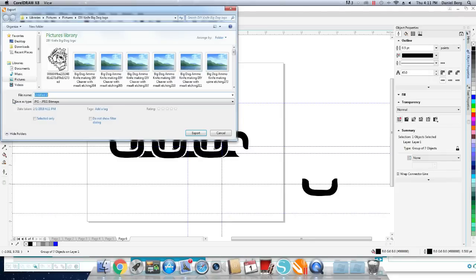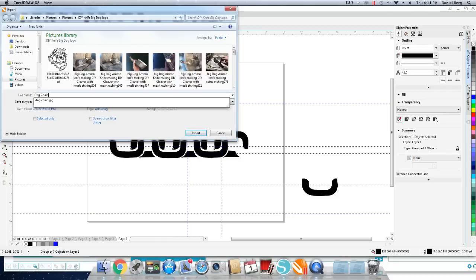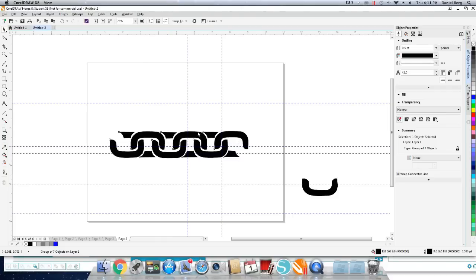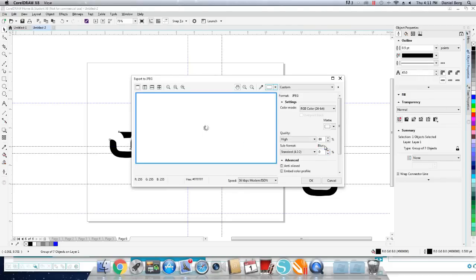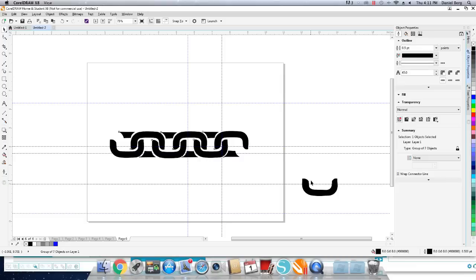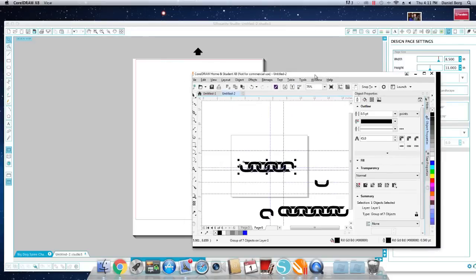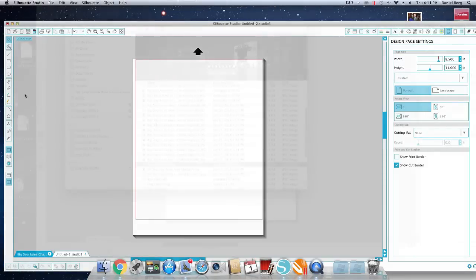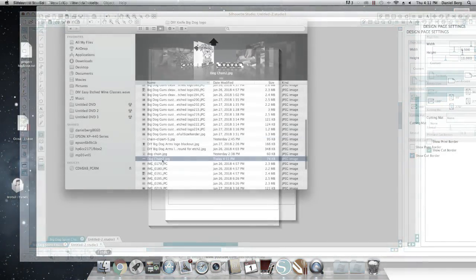In CorelDRAW, I'm leaving this as a very large object. And then I'm going to export it as a JPEG. I want it to be large because the Cameo software is going to actually trace this JPEG for me. So I've created a file name for it. I've exported it as a JPEG.